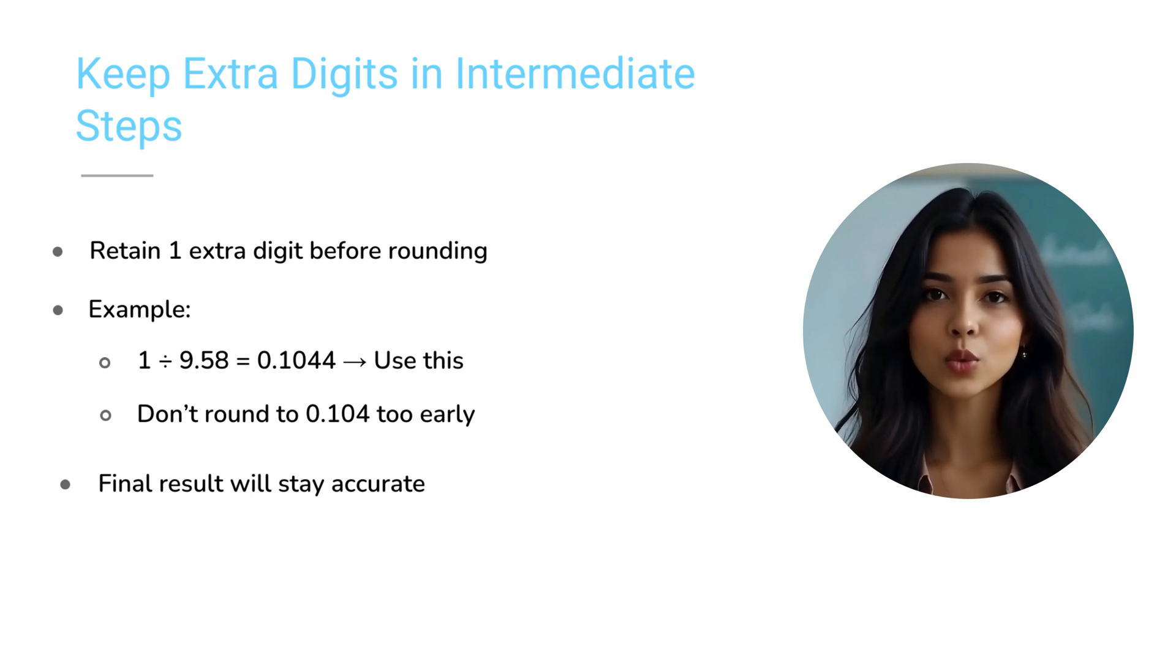Let's calculate. 1 divided by 9.58 is 0.1044. Now don't round this to 0.104 just yet. Instead, keep the full 0.1044 for the next step. But what if you round it early?